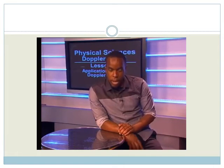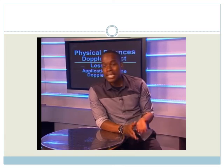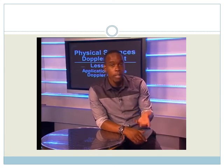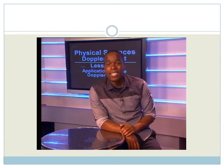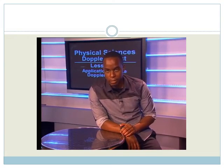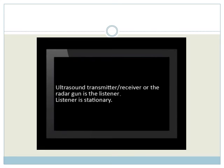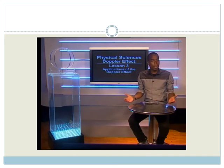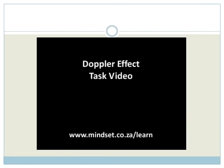In summary, the Doppler effect — be it in medicine, sports, or even traffic law enforcement — is used to measure the velocity of an object. In all these situations, the ultrasound and the radar gun serve as the listener that receives the reflected sound, and the listener is stationary. Thank you for joining us, and it is time for you to do the task found on www.mindset.co.za. Goodbye.